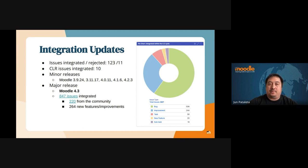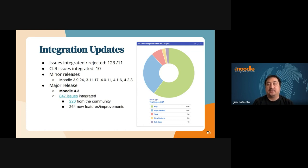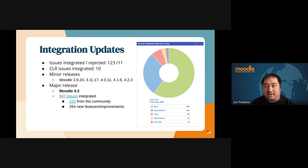This Monday, we had minor releases for Moodle 3.9 up to 4.2, and of course we have our major release for Moodle 4.3. From a quick set of stats, we landed 847 issues in total, 220 of these came from the community, 264 are new features and improvements, and we squashed 506 bugs.